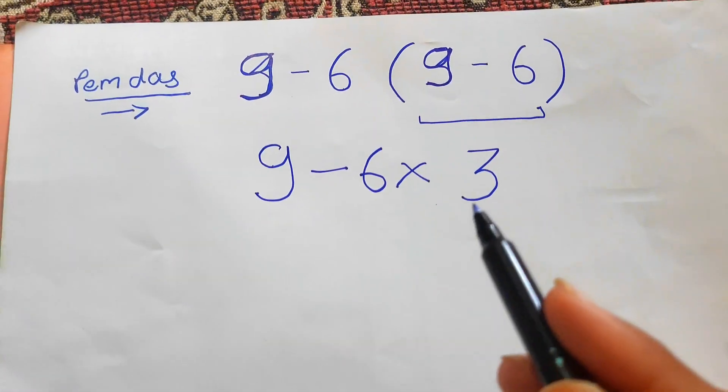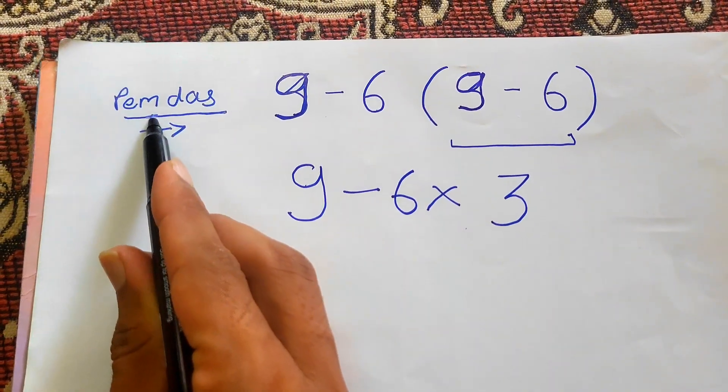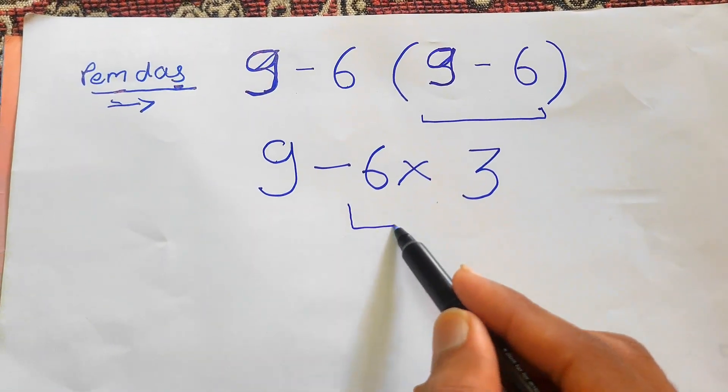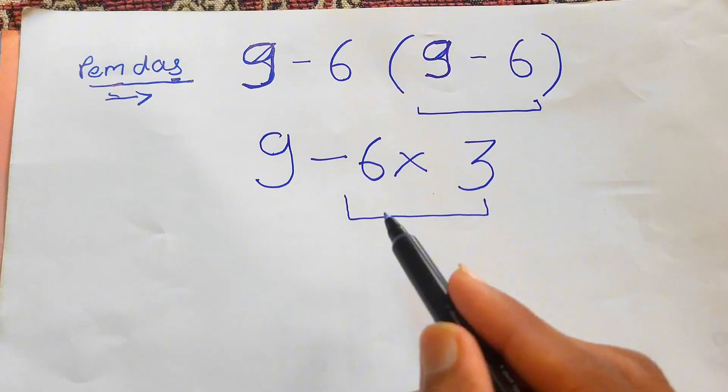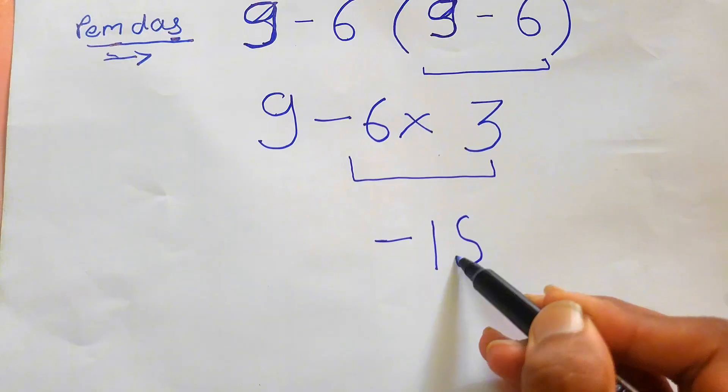Now here, as we know in PEMDAS, the priority of multiplication is greater than subtraction. So we need to execute multiplication first. We'll execute minus 6 times 3 first, which gives us minus 18.